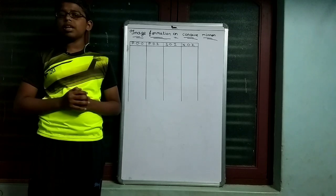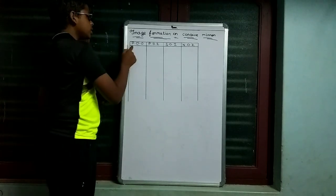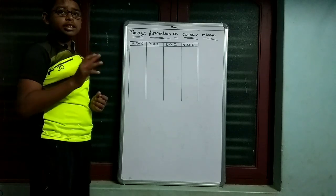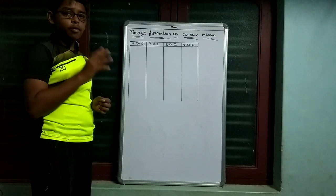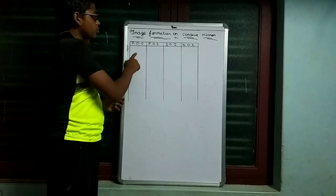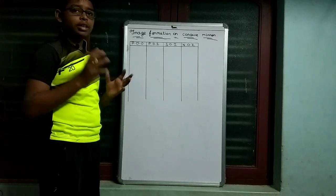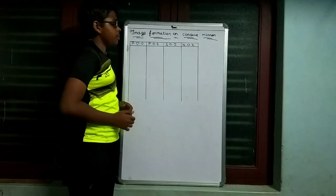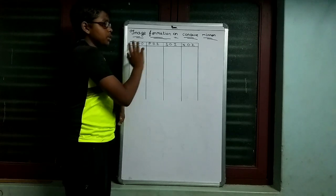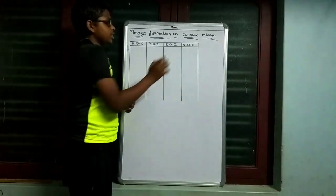First, we will use a tabular column. The columns are: position of object, position of image, size of image, and nature of image.